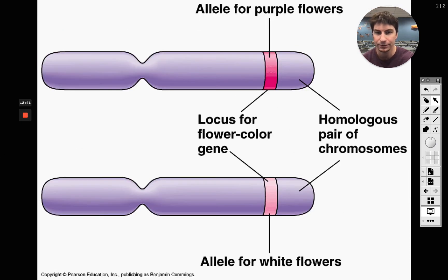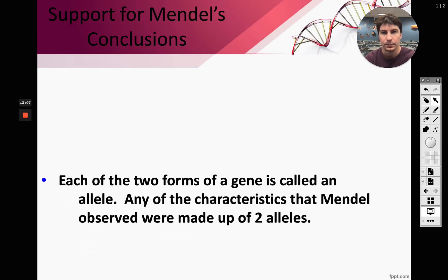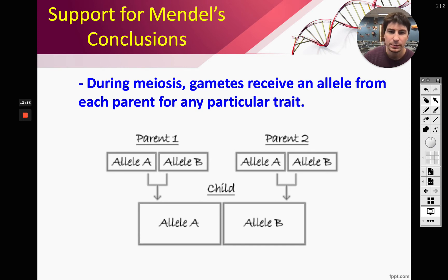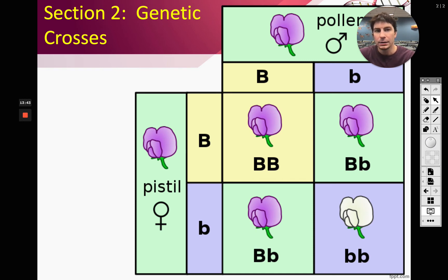The combinations of alleles in cells can be completely different. A locus is a location on a chromosome where a particular trait is located — for purple flowers, it's the same locus on both chromosomes whether dominant or recessive. During meiosis, gametes receive one allele from each parent for a particular trait. You only get one chromosome from each parent, and each chromosome carries one allele for any given trait.